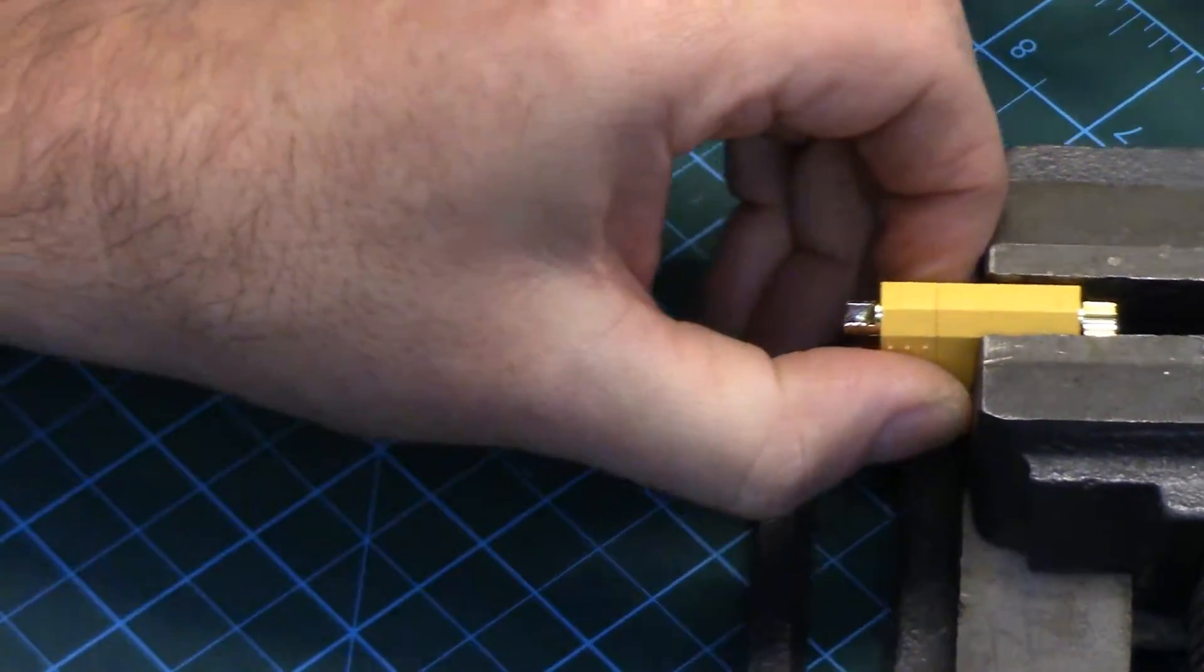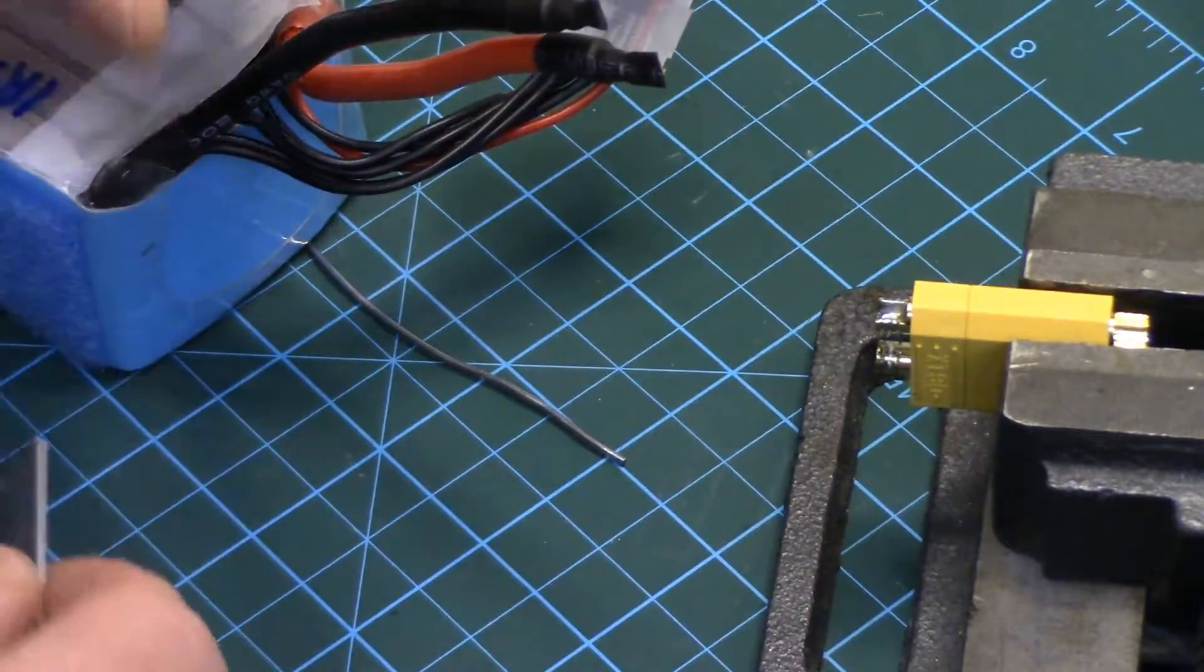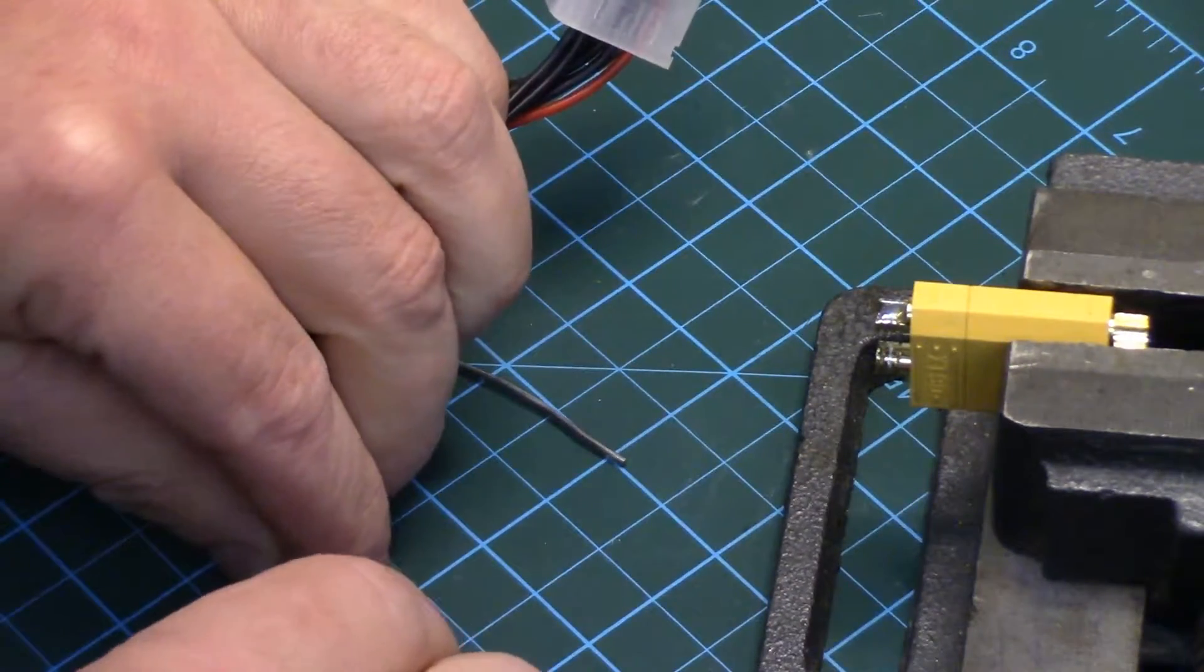So we'll do the negative side first. So again, we'll just take the insulation off the one wire on the battery here. So there's no short potential.